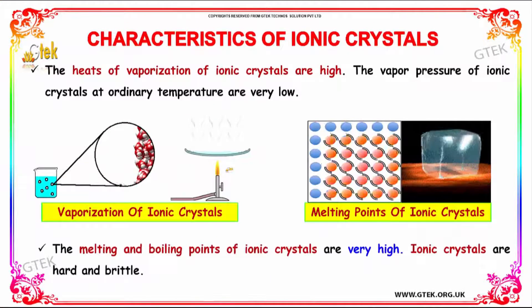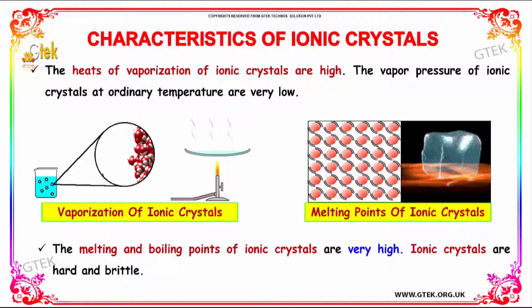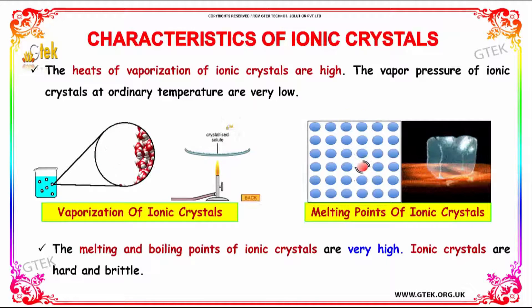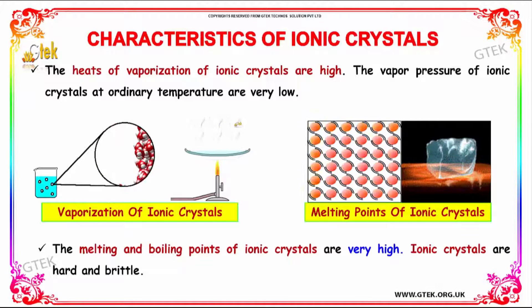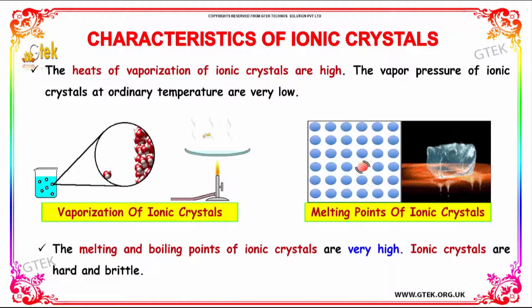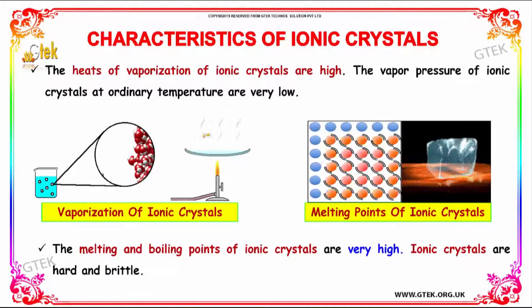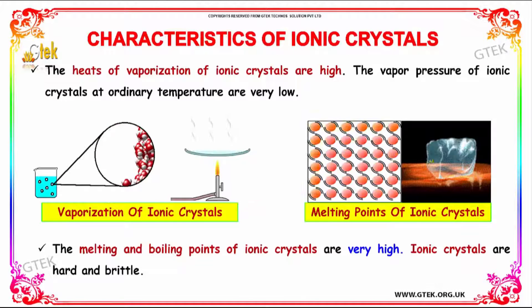Let's discuss the characteristics of ionic crystals. The heat of vaporization of ionic crystals is really high. The vapor pressure of ionic crystals at ordinary temperature is very low. The melting point of ionic crystals is very high. Ionic crystals are hard and brittle.